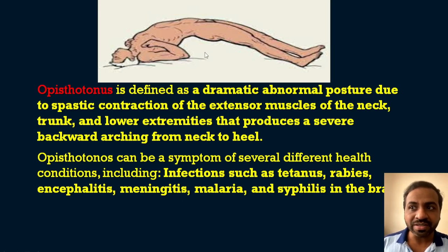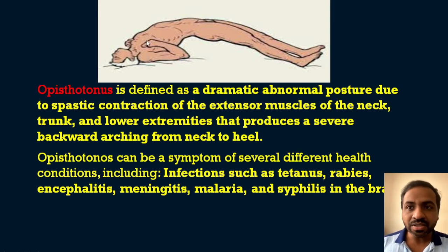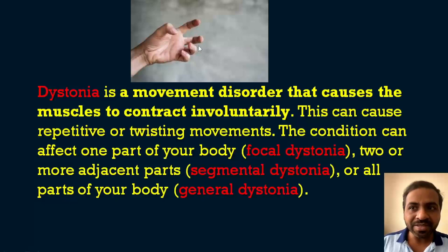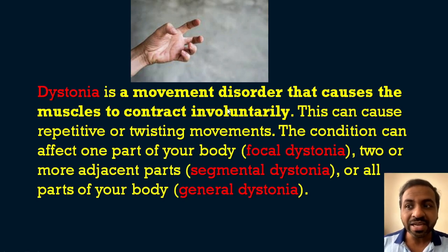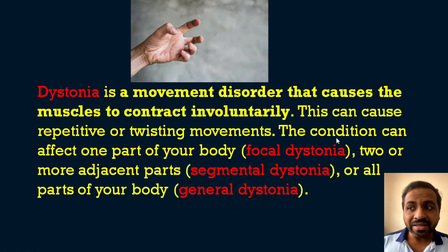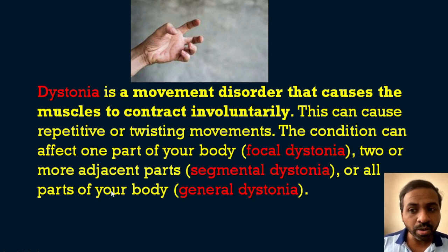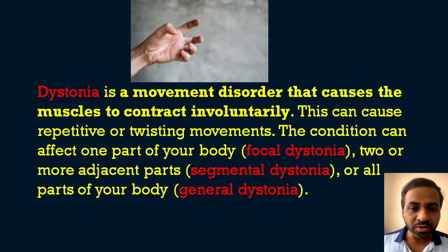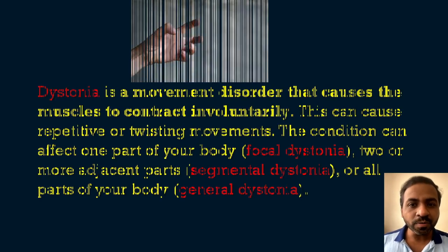Opisthotonos is where the patient presents like a bow. It is defined as a dramatic abnormal posture due to spastic contraction of the extensor muscles of the neck, trunk, and lower extremities, producing a severe backward arching from neck to heel. Opisthotonos can be a symptom of infections such as tetanus, rabies, encephalitis, meningitis, malaria, and syphilis. Dystonia is a movement disorder causing involuntary muscle contraction, which can cause twisting movements. Focal dystonia affects one body part, segmental affects adjacent parts, and generalized affects the whole body.